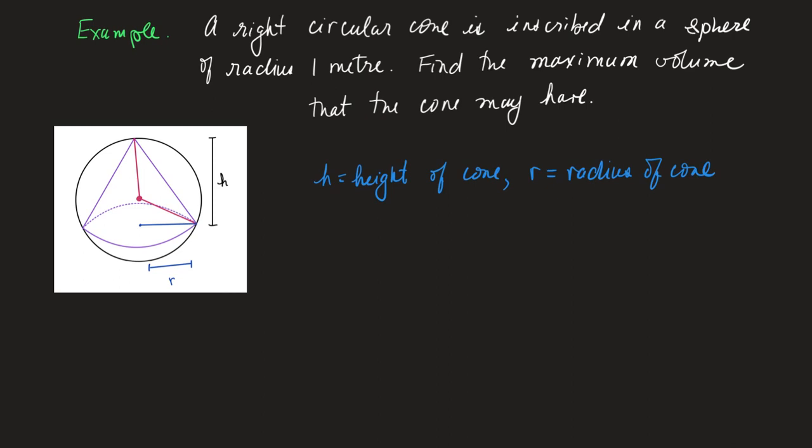In this video I'm going to work through this optimization problem. I'm given a right circular cone inscribed in a sphere, and the sphere has radius 1 meter. This is the center of the sphere, so the distance to the edge is 1 meter here and here. I'm asked to find the maximum volume that the cone may have.